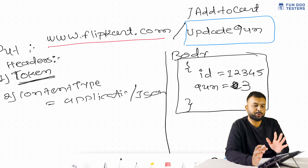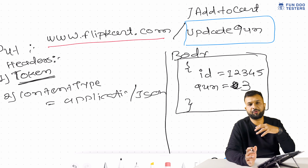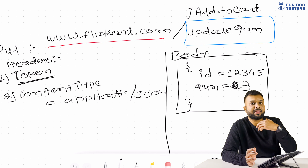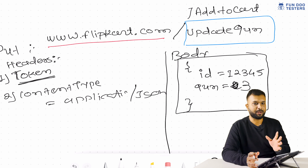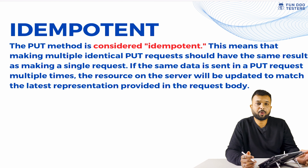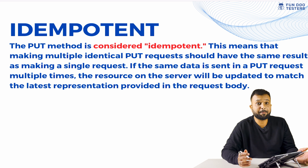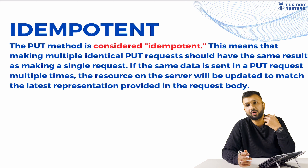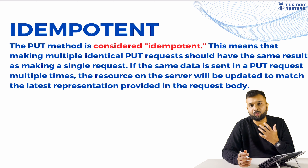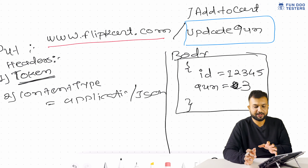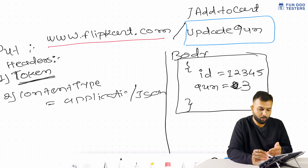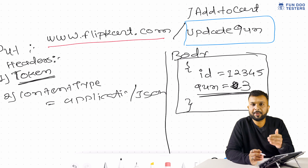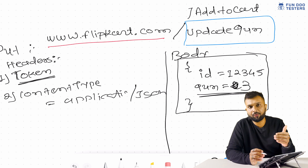This is how the PUT request looks. When we hit this PUT request from Postman, the quantity will become 2. If we go to the UI, the quantity will reflect as 2. If we want to update further, we can pass 3 in the body and trigger the PUT request again, and the quantity will become 3. This is the basic purpose of a PUT request — to update an already-created resource.